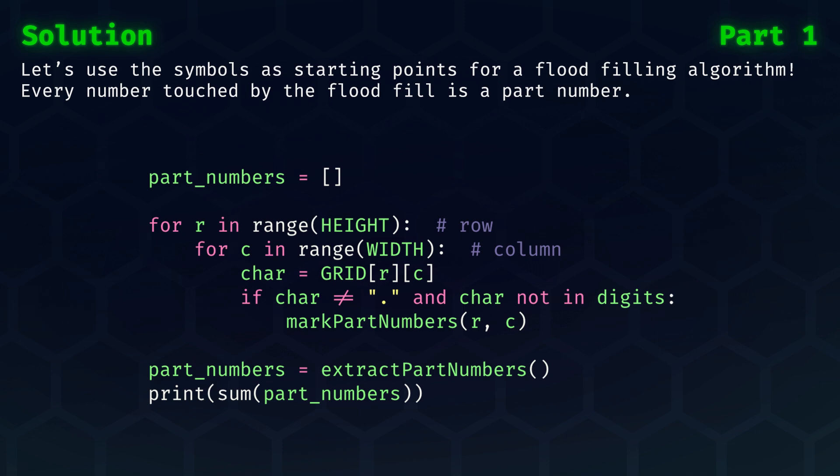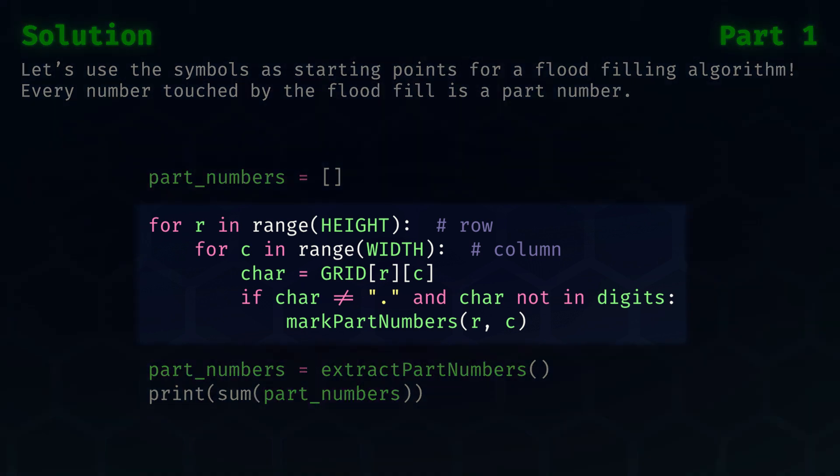We shall, of course, need to do some 2D processing of the grid. Let's use the symbols as starting points for a flood filling algorithm. Every number touched by the flood fill shall be a part number. If we take this approach, then the outline of the solution can look as follows. We will loop over the rows and columns of the grid and inspect the character at every position. If that character is not a dot and it is not a digit, then we will trigger a flood fill via the mark part numbers function.